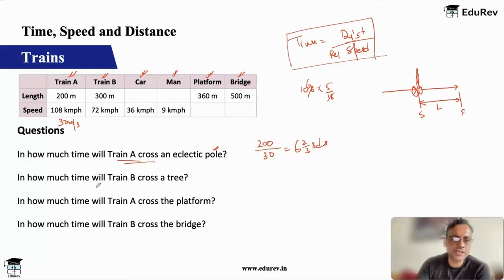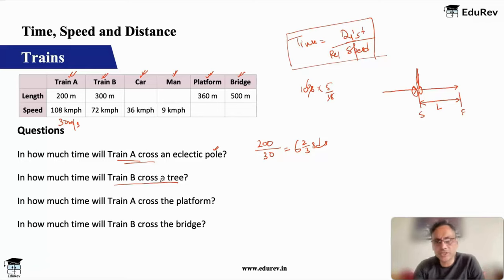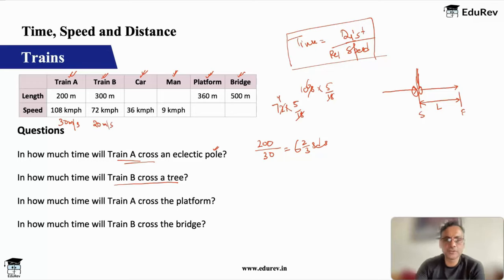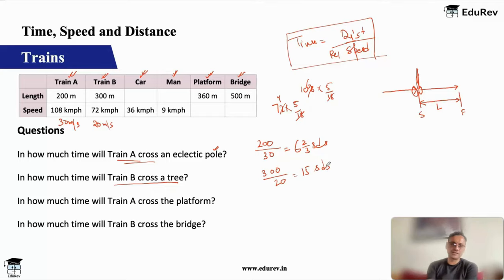Second question: in how much time will train B cross a tree? A tree is stationary like a pole. Train B's speed is 72 km/h, which is 72 × 5/18 = 20 meters per second. Train B has a length of 300 meters. So time = 300 ÷ 20 = 15 seconds.